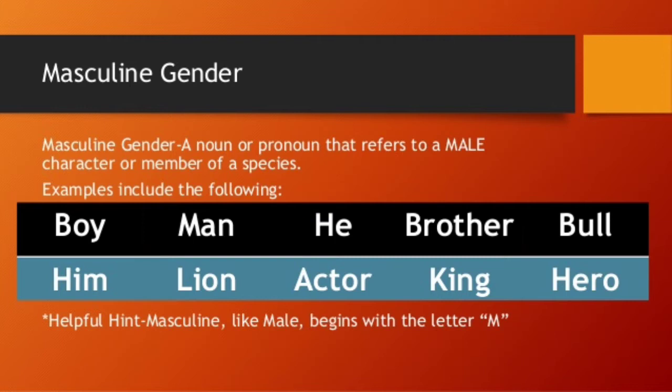Examples of masculine gender include: boy, man, brother, bull — these come under common nouns but here we are being specific about gender. Him, lion, actor, king, hero — whenever you read these words, automatically things of a male category come to mind. When we say 'king,' you know it is not a queen.